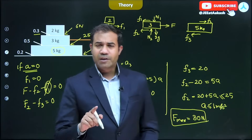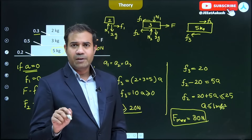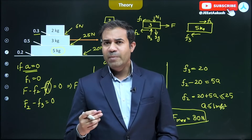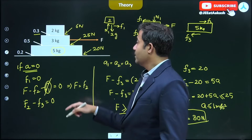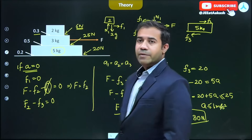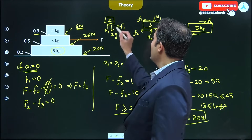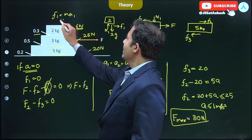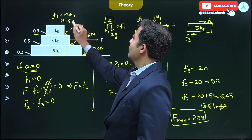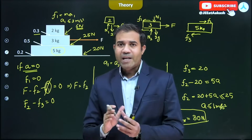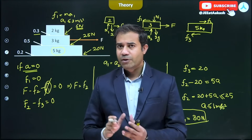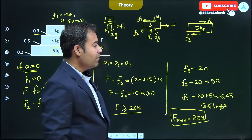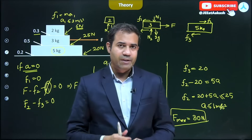We also need to check for slipping between the 2 kg and 3 kg blocks. The maximum friction at that contact is 6 Newtons. For the 2 kg block, F1 equals 2A, so the acceleration limit is 3 meters per second squared. Since the acceleration at which slipping starts between 3 kg and 5 kg is only 1 meter per second squared, slipping does not start between the 2 kg and 3 kg blocks first.